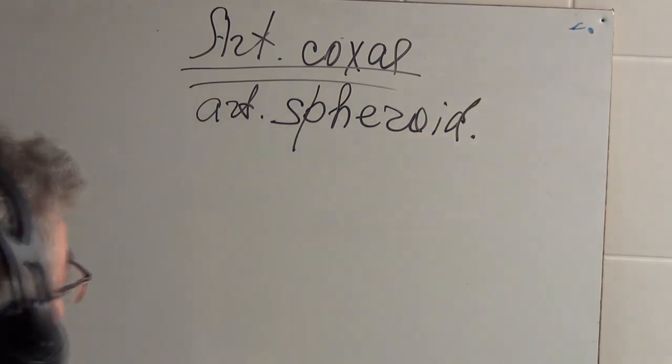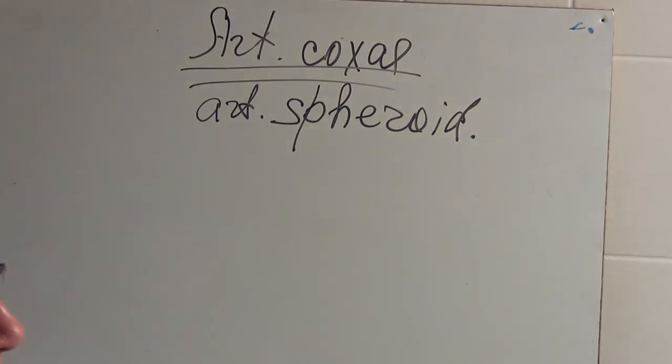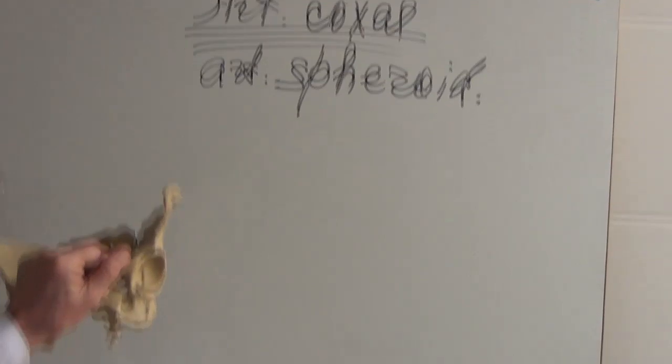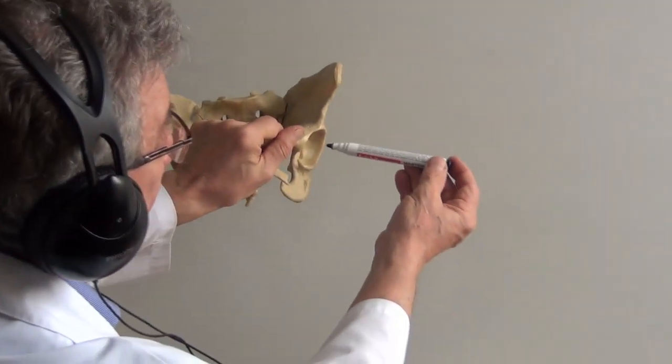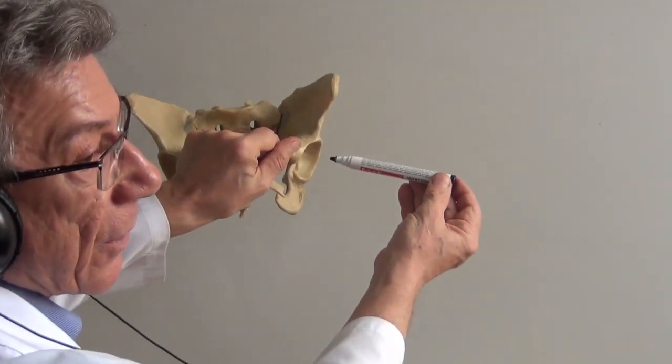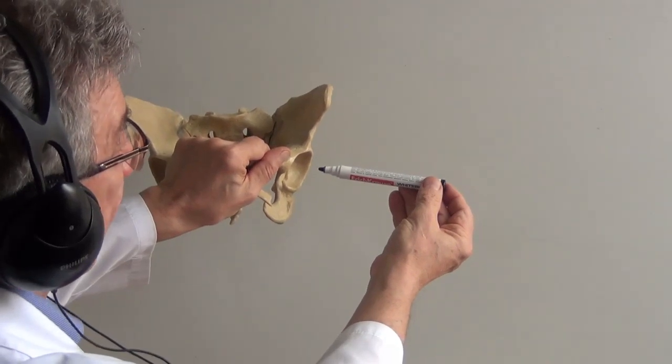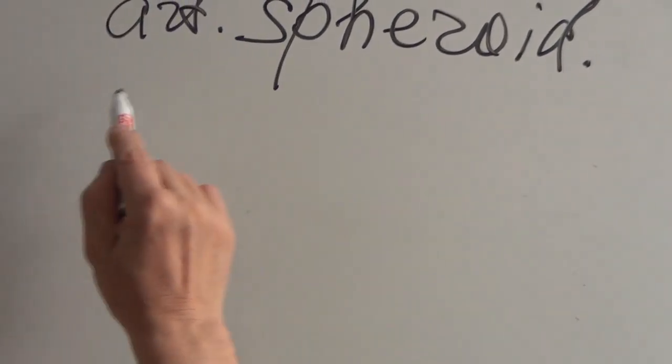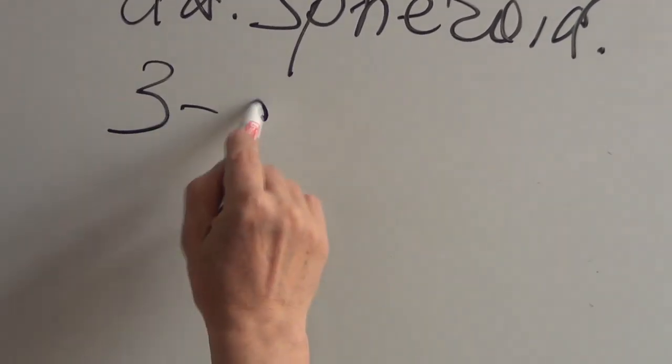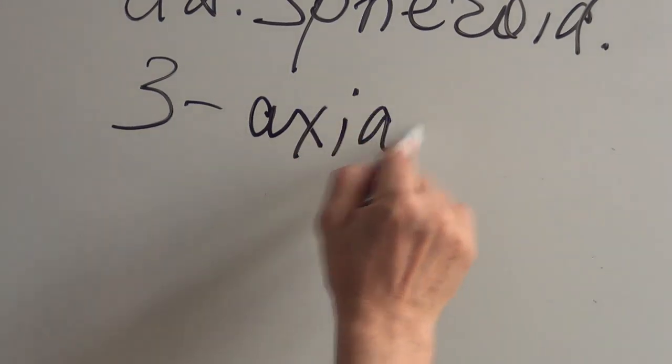So how many axes can we use in this joint? Three axes. So the first axis is like this. What is this axis? Frontal axis. So three axial, three axial joint.